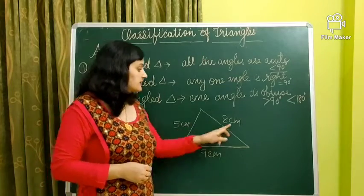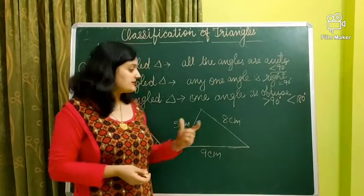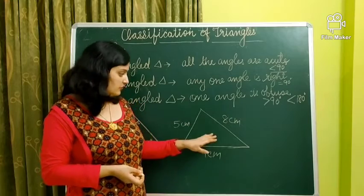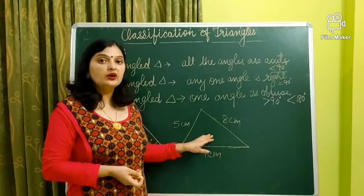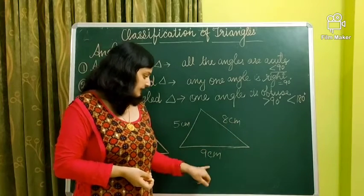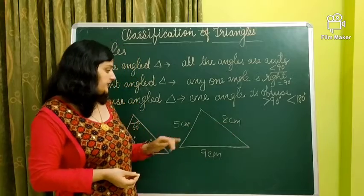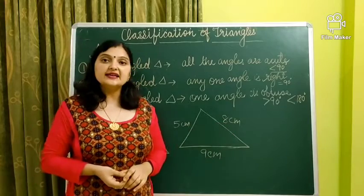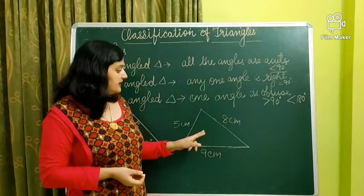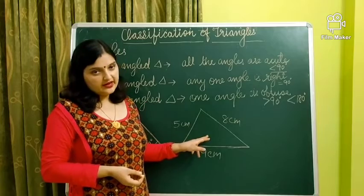Now in this triangle, sides are given. All the sides are different. So we can say that this is a scalene triangle.